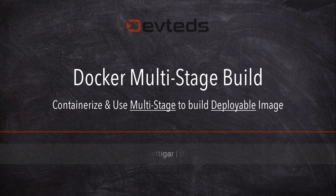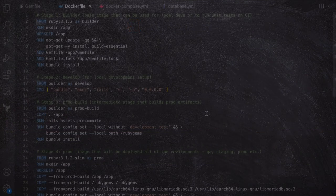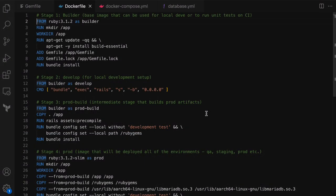In this video I'm going to show you how to write a Dockerfile in a multi-stage structure, which will help us build separate Docker images for local development as well as the deployable image that we then deploy to other environments like production.